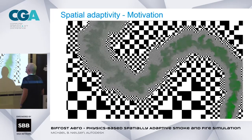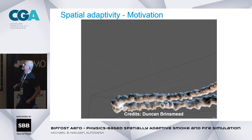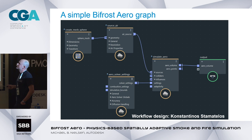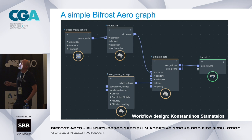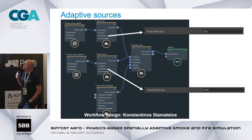Here's a zoom on that simulation showing the resolution drop along the trail. In Bifrost you build simulations in the graph. Costa, our designer, designed how you work with these nodes. It's just a data flow graph - up here we set up a source which is our emitter, then we have some settings and the simulate Aero node is the compute engine, and then you output to Maya and it will render the volumes or meshes or whatever it is that you output.